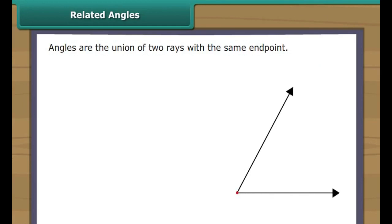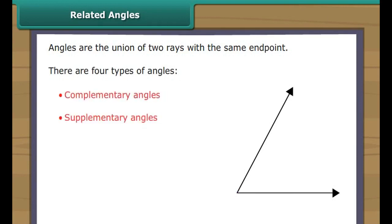Related angles. An angle is defined as the union of two rays that have the same end point. The sides of the angles are the two rays, while the vertex is the common end point. There are four types of angles: complementary angles, supplementary angles, adjacent angles and vertical angles.